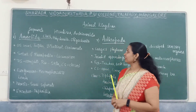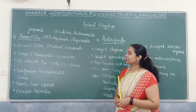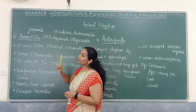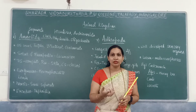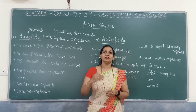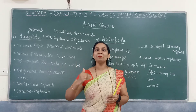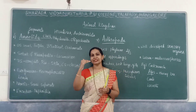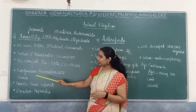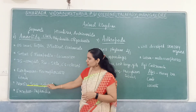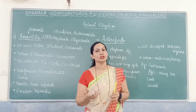Namaste dear students. Today I will discuss the next part of animal kingdom — phylum Annelida. The word 'annulus' refers to rings; their body mainly consists of segments. Examples of Annelida include earthworm, leech, and Nereis. These three are very important examples for phylum Annelida.